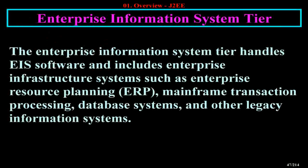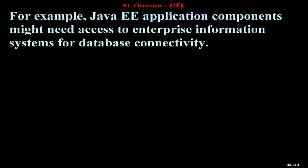The Enterprise Information System tier handles EIS software and includes Enterprise Infrastructure Systems such as Enterprise Resource Planning (ERP), Mainframe Transaction Processing, Database Systems, and other legacy information systems. For example, Java EE application components might need access to Enterprise Information Systems for database connectivity.